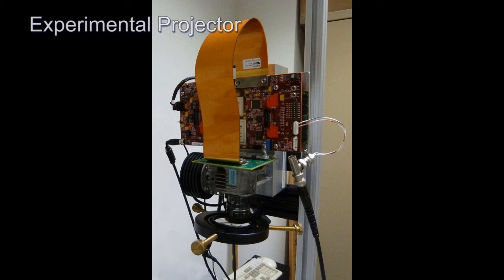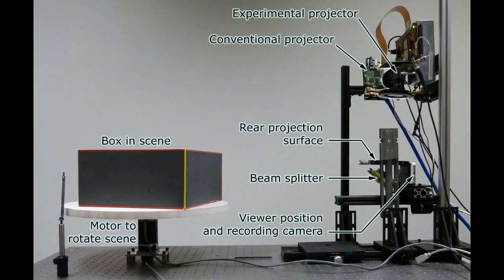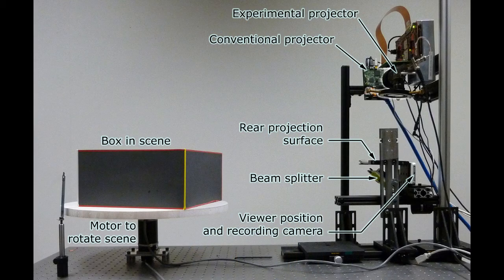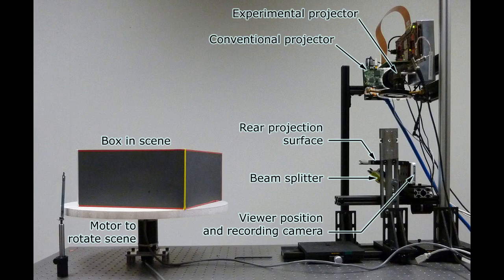We constructed an experimental benchtop display system that acts like an optical see-through head-mounted display. A camera is mounted to see both an overlaid projected image and a moving physical cube using a beam splitter.